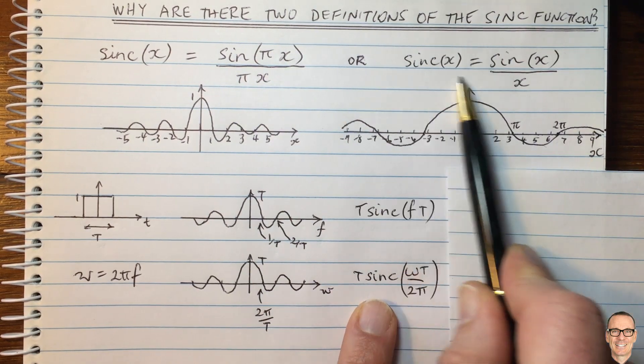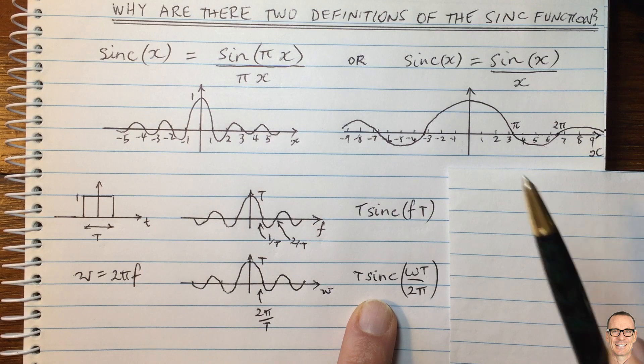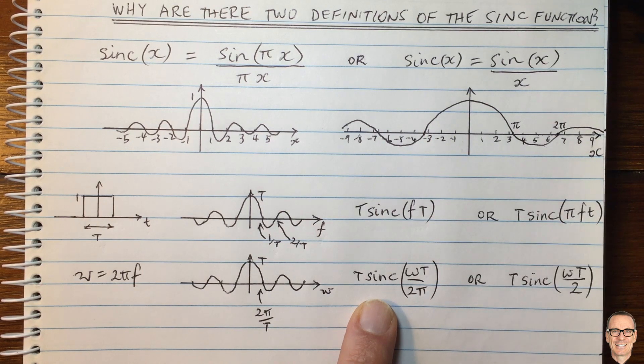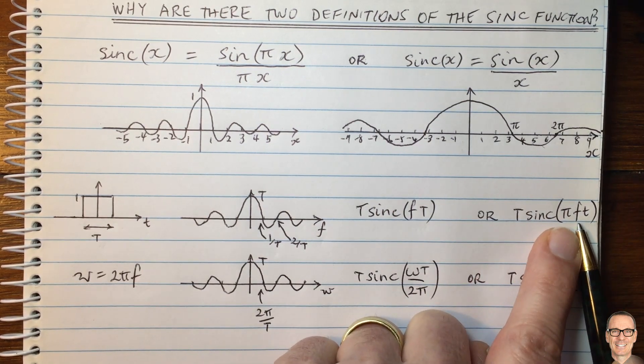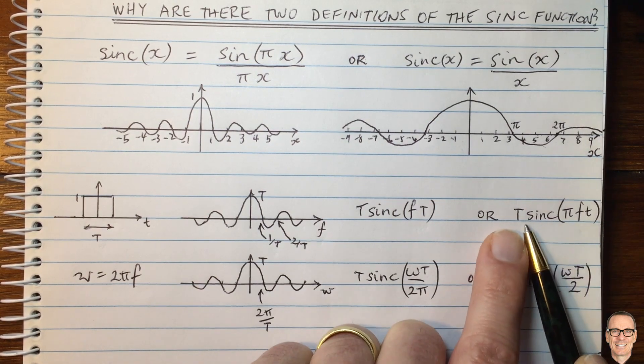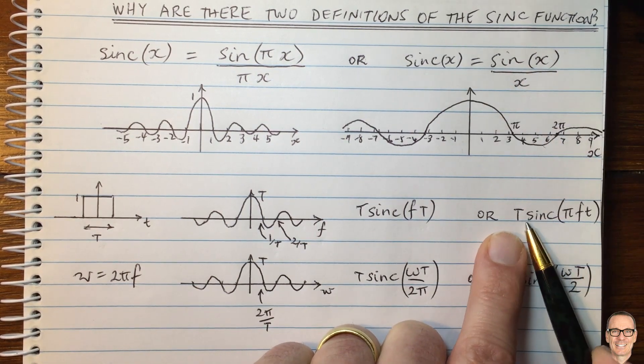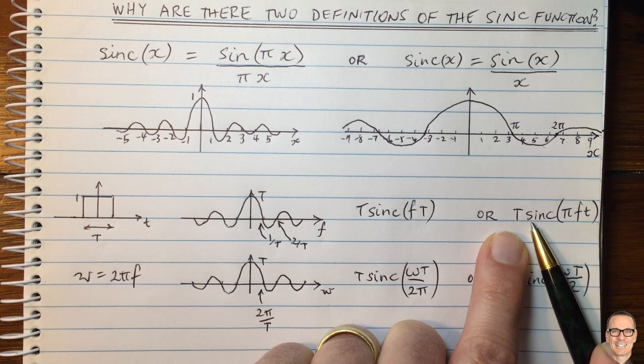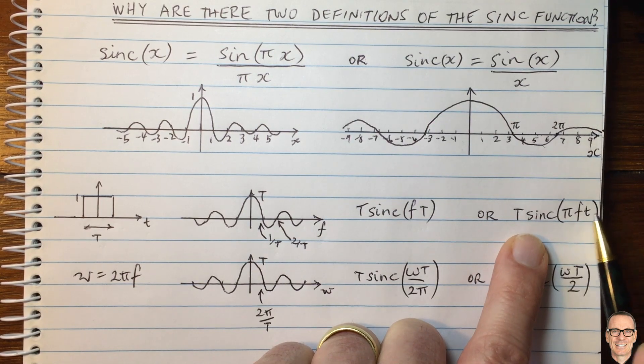What if we use the right-hand definition? Well, here is what they look like. So in terms of the frequency f in hertz, now if you use the right-hand definition, you would write it down as capital T sinc of pi fT.